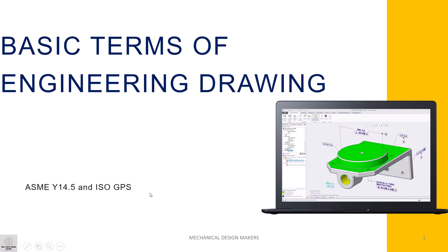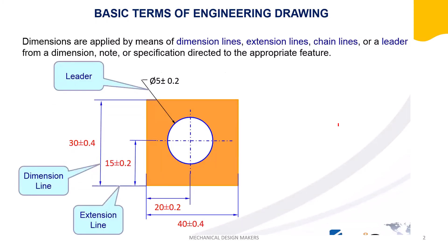Hi guys, welcome back to Mechanical Design Makers. In this video we are going to see basic terms and rules of engineering drawing. When you put a dimension here, this is dimension tolerance. We use extension lines from actual part features. Points one, two, three, and four are called features of part. A line extended from a feature of part is called an extension line.